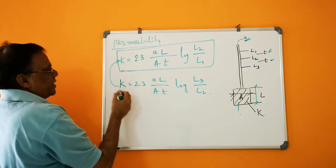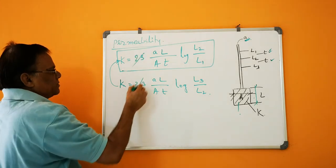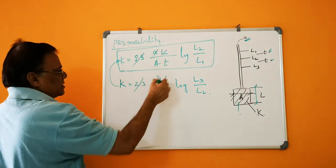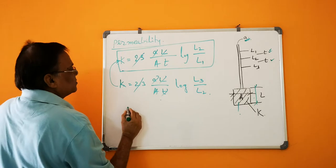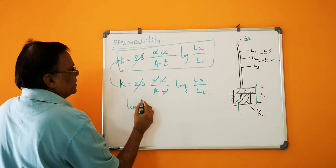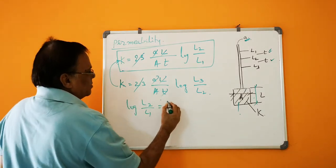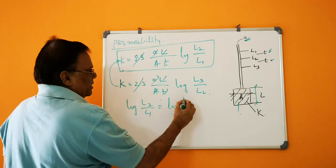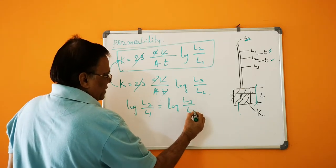So once if these two are equal, then this will go, all the common terms will cancel. So log L2 by L1 is equal to log L3 by L2.